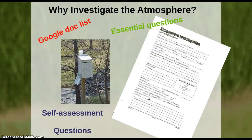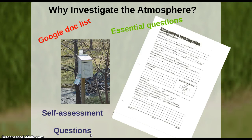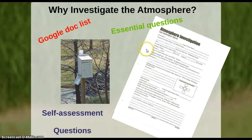Then we have 'Why Investigate the Atmosphere,' where we'll create a Google Doc list in the classroom so kids can access it anytime and use it in the future. They'll continue to do their self-assessments, and I'll really emphasize the essential questions because at the very end they have their own investigation, where they create their own question based on whatever they're really interested in — maybe they found a leaf and are curious why it looks the way it does. They write everything down in their journals so that eventually they can find the question they really want to investigate.